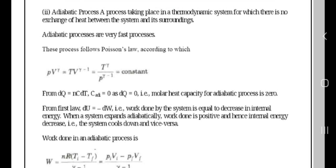Adiabatic processes are very fast processes. Isothermal is a slow process, adiabatic is a fast process. The adiabatic process follows Poisson's law, according to which PV^γ equals constant.